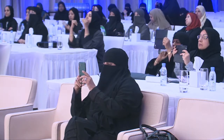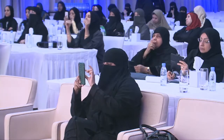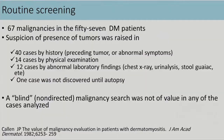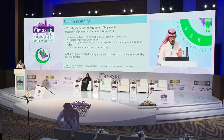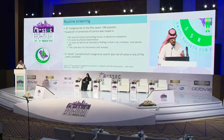Routine screening was supported by a few studies, mostly published in the 1980s. In one study, 67 malignancies in 157 dermatomyositis patients were discovered: suspicion was raised in 40 patients by good history alone, in 14 by physical examination, in 12 by routine workup, and just one case was discovered through biopsy. The author concluded that blind malignancy search was not of value.